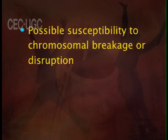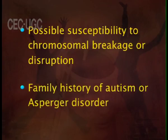Some research indicates environmental risk factors behind this disorder, including viral exposure, possible bacterial infections, and certain infections like rubella and herpes simplex, which may be responsible for its development. Apart from viral infections, toxin exposure, prematurity, and teratogenicity are also environmental risk factors. There are also genetic risk factors, including possible susceptibility to chromosomal breakage or disruption and family history of autism or related disorders.